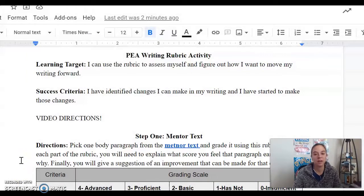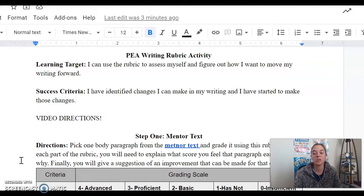Once we get our feedback, we're going to take it, use it, and then move on to our summative. So let's take a look here at your activity for today. Our learning target is, I can use the rubric to assess myself and figure out how I want to improve to move my writing forward. My success criteria is, I have identified changes I can make in my writing, and I have started to make those changes.